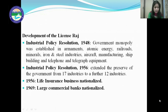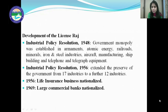Regarding the development of the license Raj: the Industrial Policy Resolution 1948 established government monopoly in armaments, atomic energy, railroads, minerals, iron and steel industries, aircraft manufacturing, shipbuilding, and telephone and telegraph equipment. These industries came under government control, and only public sector companies could manufacture these products — no private company was allowed to produce these goods.